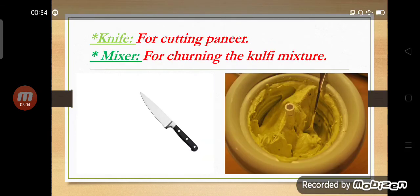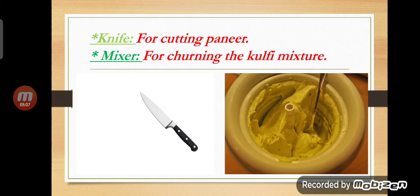The next object is a knife. If we are making any milk product, we use a knife for cutting things — for example, for cutting paneer. The next object is a mixer. A mixer is used for churning and is also used to blend contents when making kulfi, ice cream, milkshake, etc.